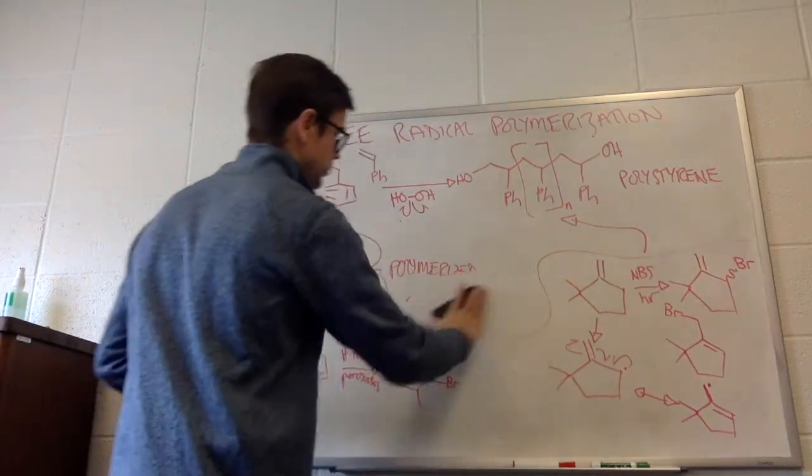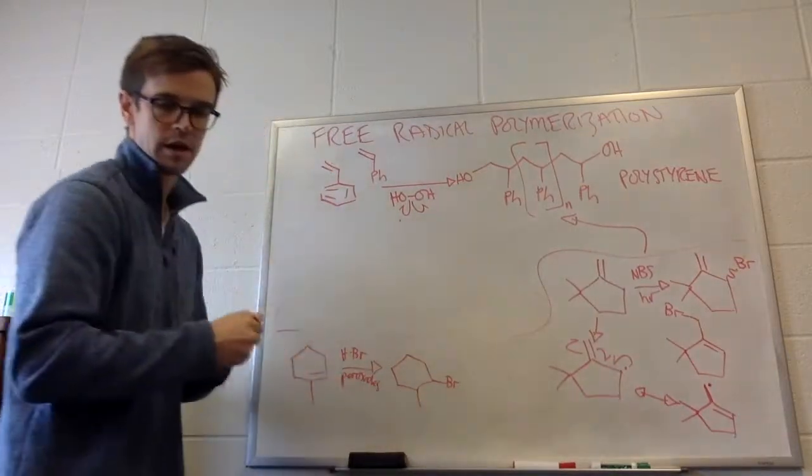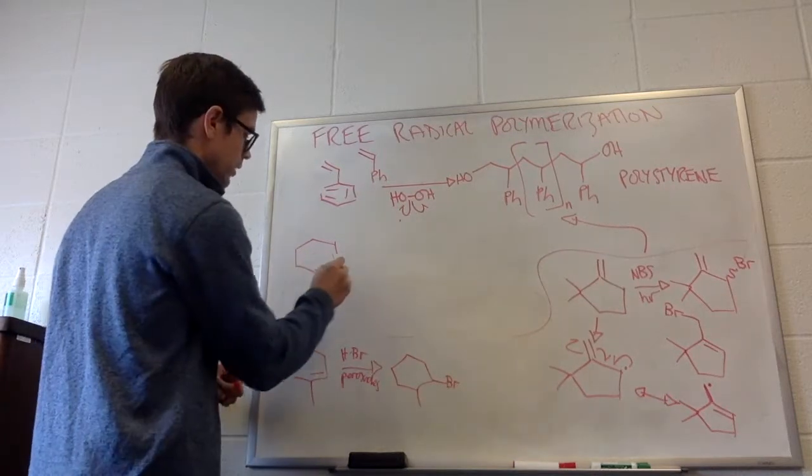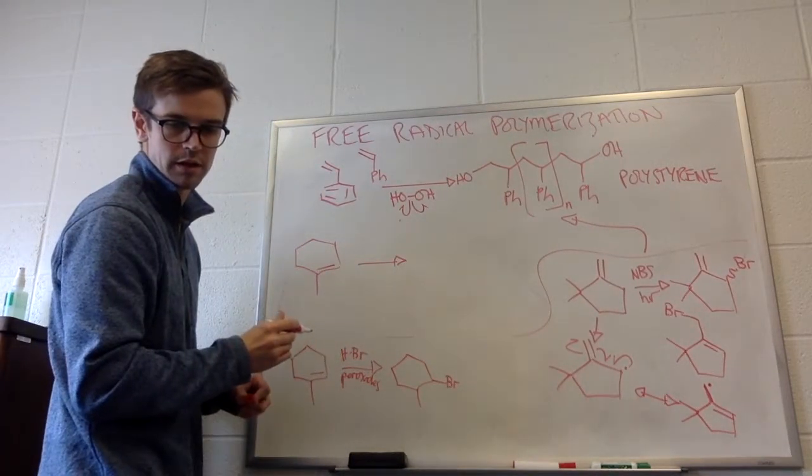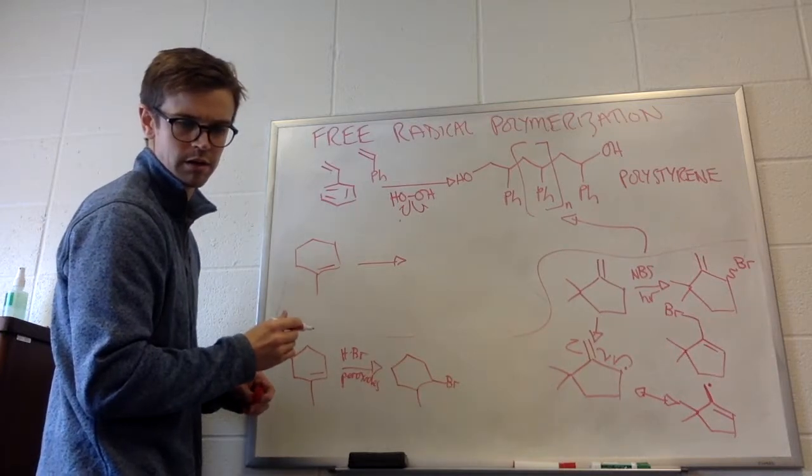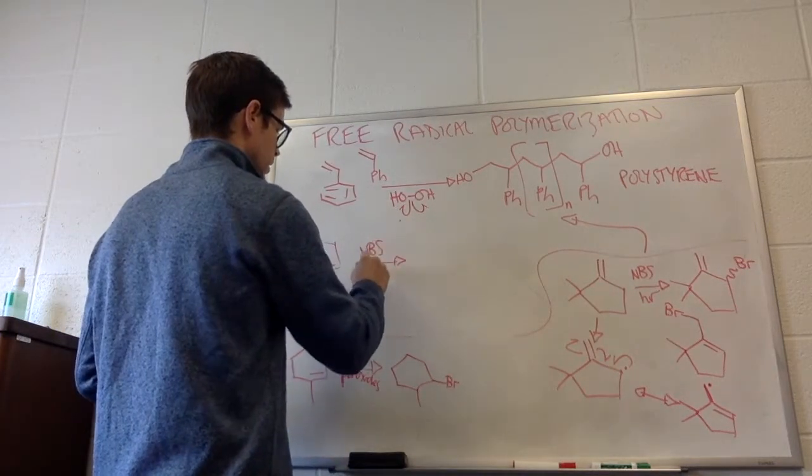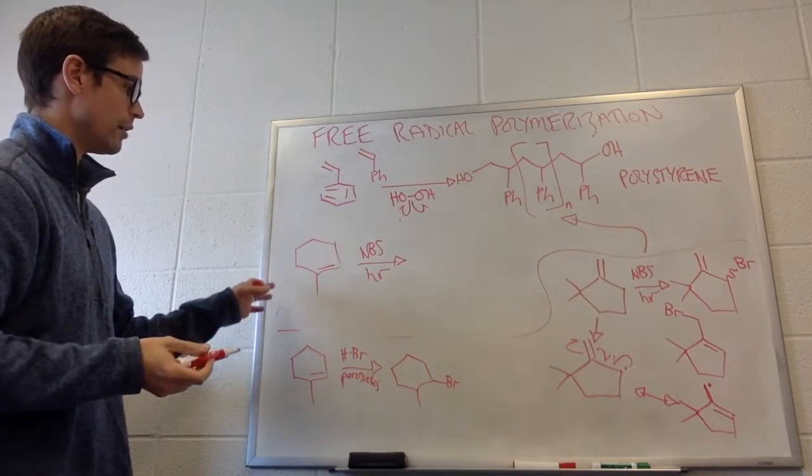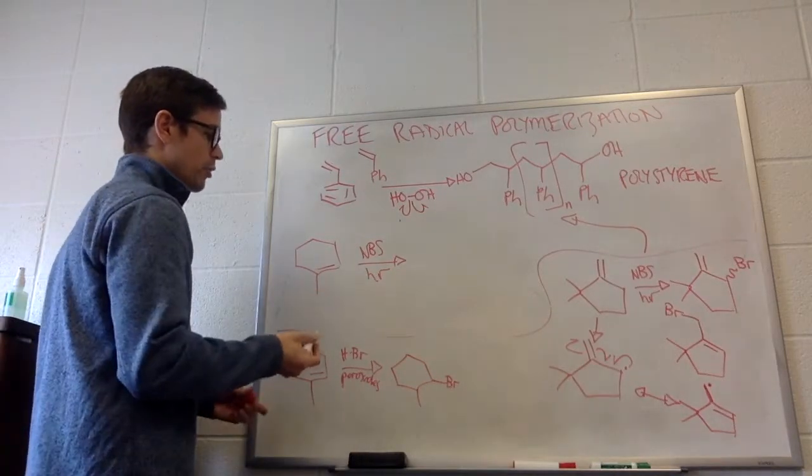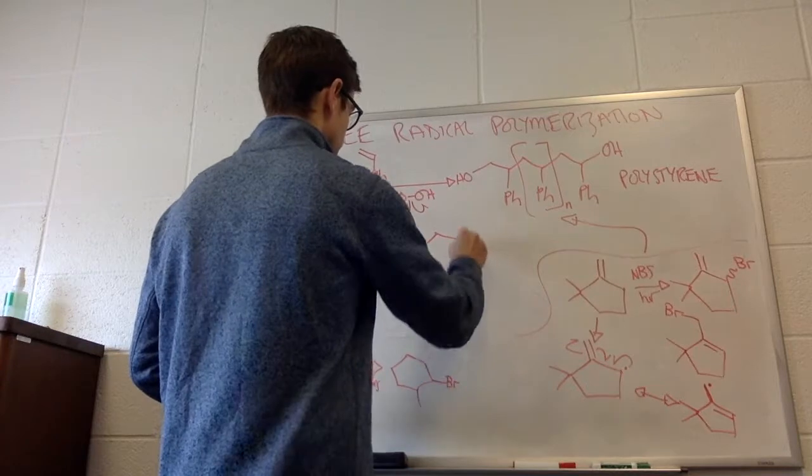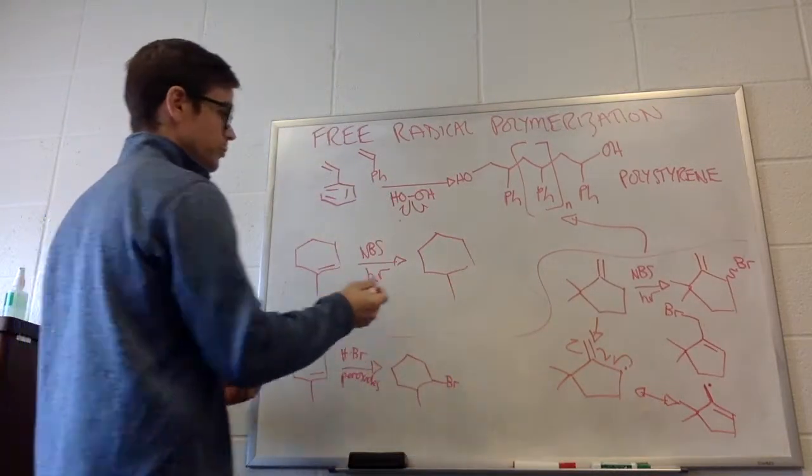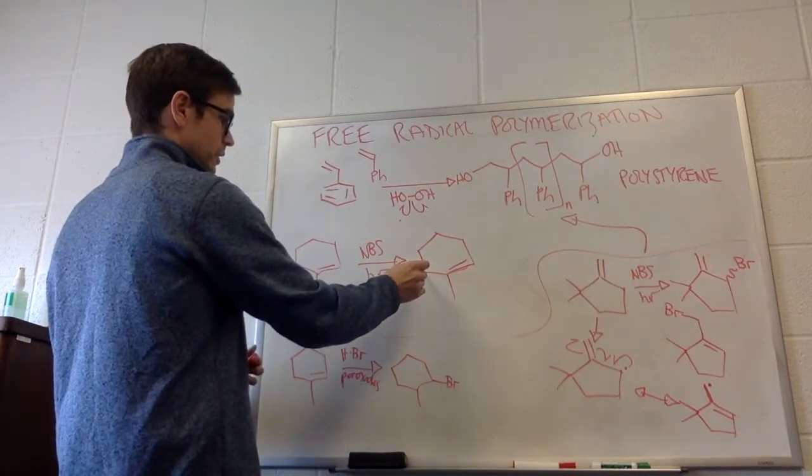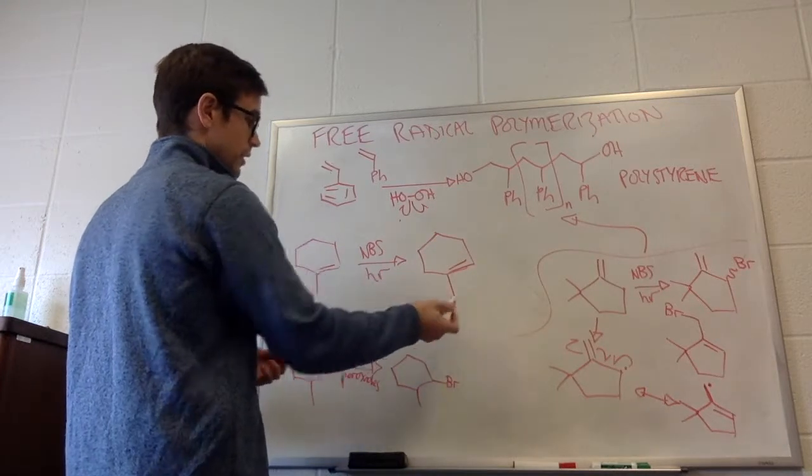And I'll just do the last one right here. The last question was taking the same molecule here and treating that with NBS and light again. So again, here we can form multiple products. This is going to again be an allylic bromination. So we're going to brominate at the allylic positions. So this is an allylic position. This is an allylic position. This is an allylic position. This is going to make quite a few products.